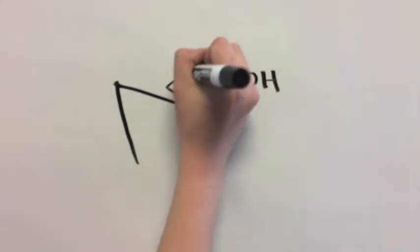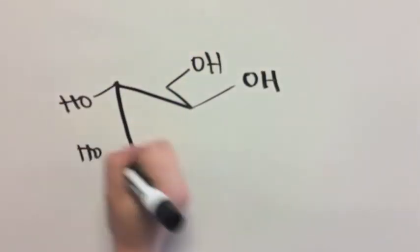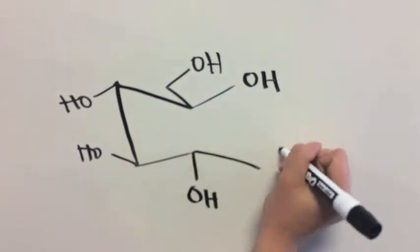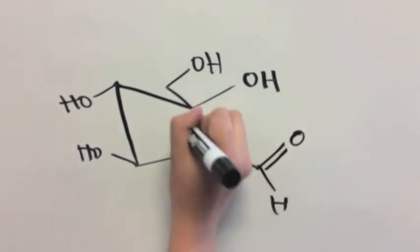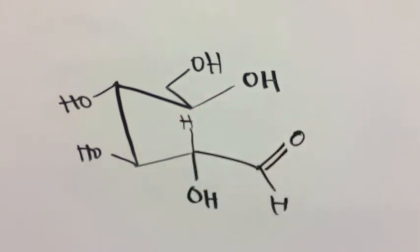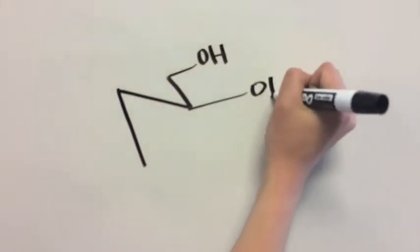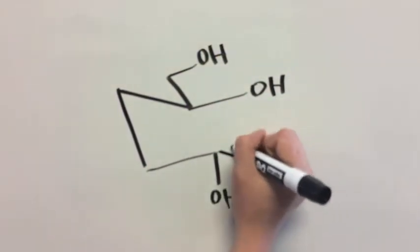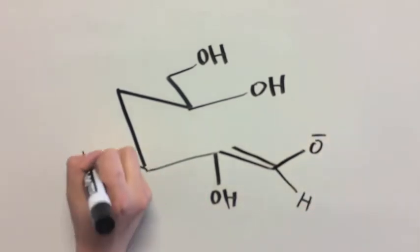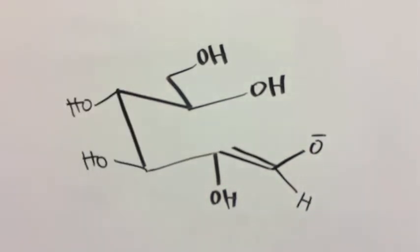Now that the ring is broken, we need to change the aldose into the ketose form by moving the carbonyl from C1 to C2. To start that process, a base deprotonates this carbon, bouncing its electrons down to form an alkene bond with an alcohol group on either side, an enediol. Like so.